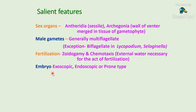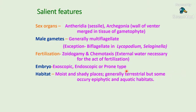The embryo formed by mitotic division of the zygote may be of three types in pteridophytes: exoscopic, endoscopic, or prone type. In exoscopic type, the cell toward the neck of the archegonium gives rise to the stem apex; in endoscopic, the cell toward the base gives the stem apex; in prone type, the zygote divides by a vertical wall and any of the two lateral cells produces the stem apex. Prone type is found in ferns. The habitat of pteridophytes is generally moist and shady, though some occupy epiphytic and aquatic habitats.